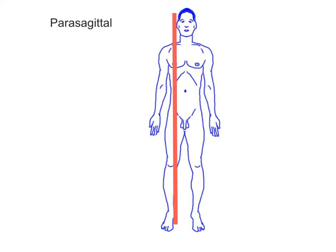A parasagittal plane divides the body or an organ into unequal right and left sides. This plane does not pass through the midline.